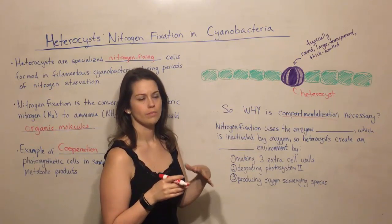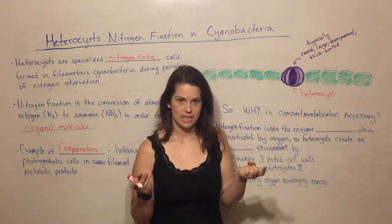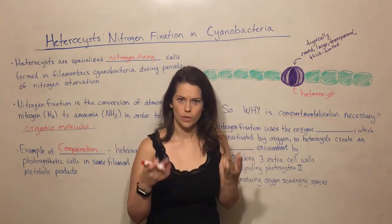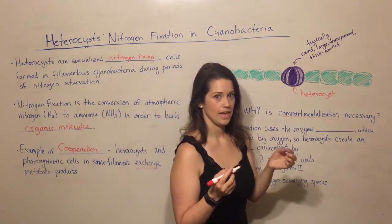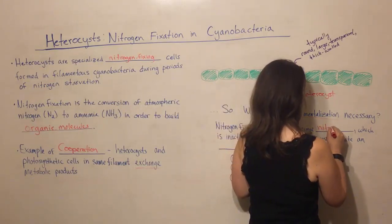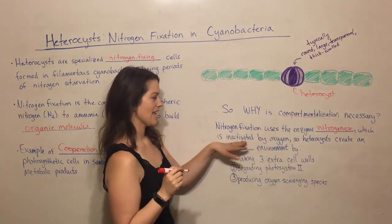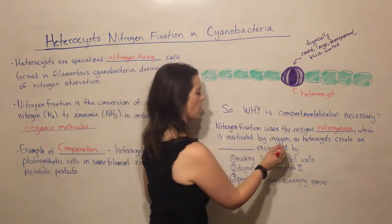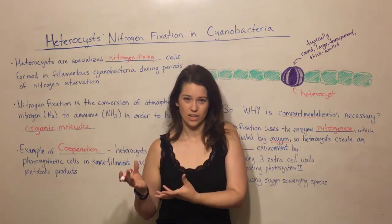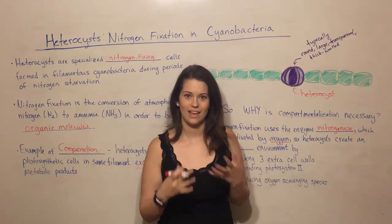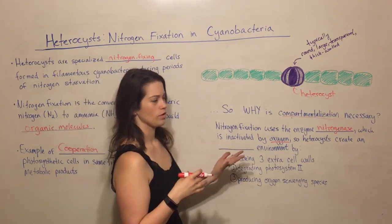Why is this compartmentalization necessary? Why can't every cell fix nitrogen and conduct photosynthesis — why can't they all do both? It's necessary because nitrogen fixation relies on a specific enzyme called nitrogenase, and nitrogenase is actually inactivated by oxygen. Oxygen is one of the main products of photosynthesis, so if photosynthesis is occurring, nitrogen fixation can't occur. They can't happen in the same space because the product of one prevents the other from functioning.